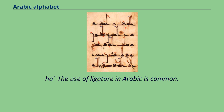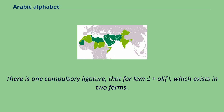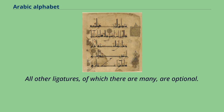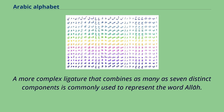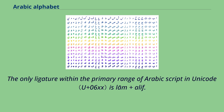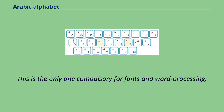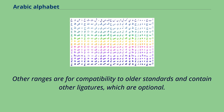The use of ligature in Arabic is common. There is one compulsory ligature, that for Lam plus Alif, which exists in two forms. All other ligatures, of which there are many, are optional. A more complex ligature that combines as many as seven distinct components is commonly used to represent the word Allah. The only ligature within the primary range of Arabic script in Unicode is Lam plus Alif, and this is the only one compulsory for fonts and word processing. Other ranges are for compatibility with older standards and contain other ligatures, which are optional.